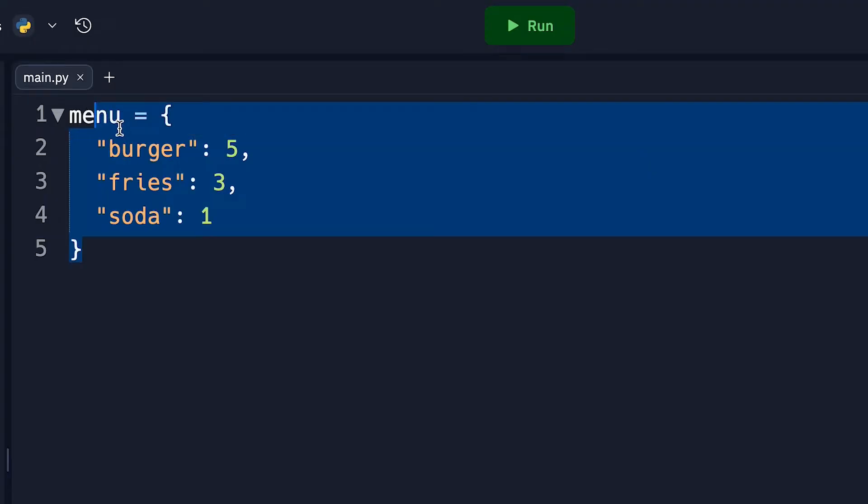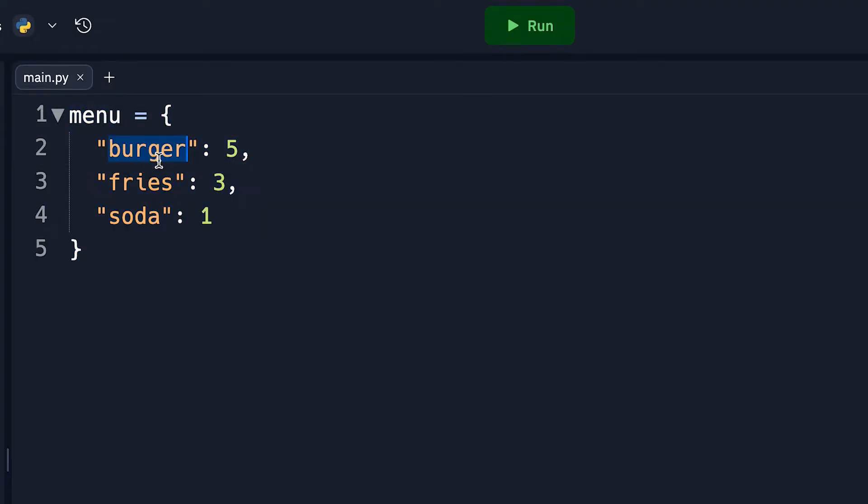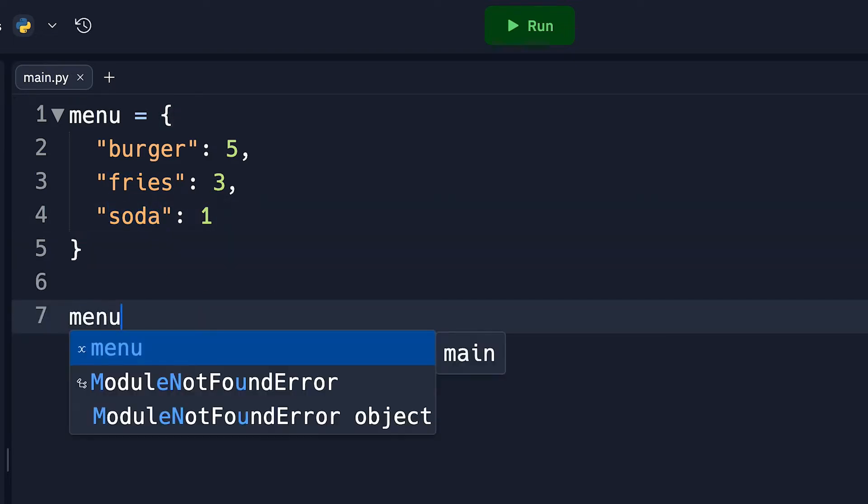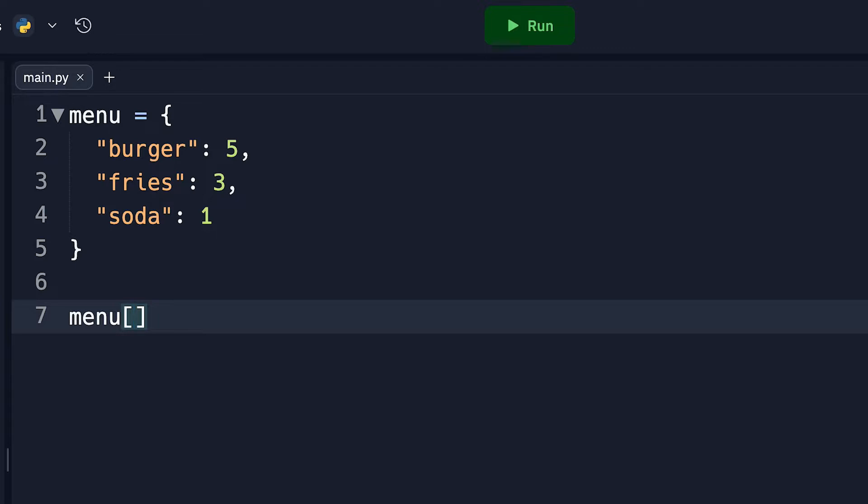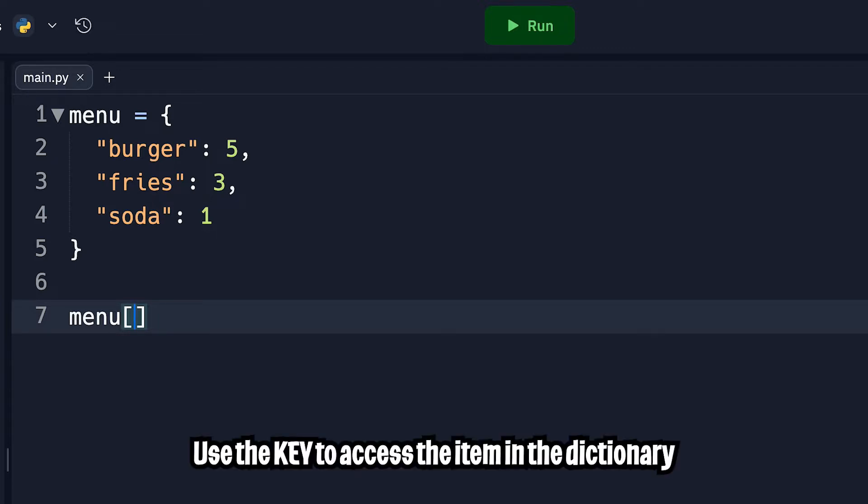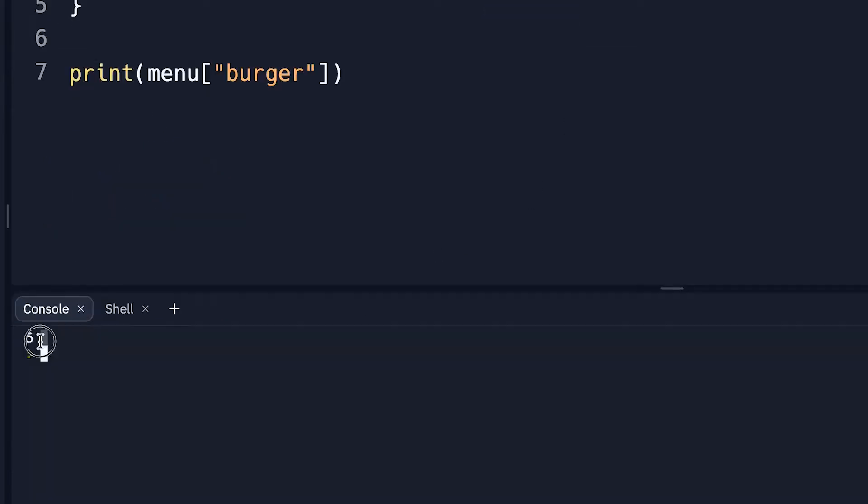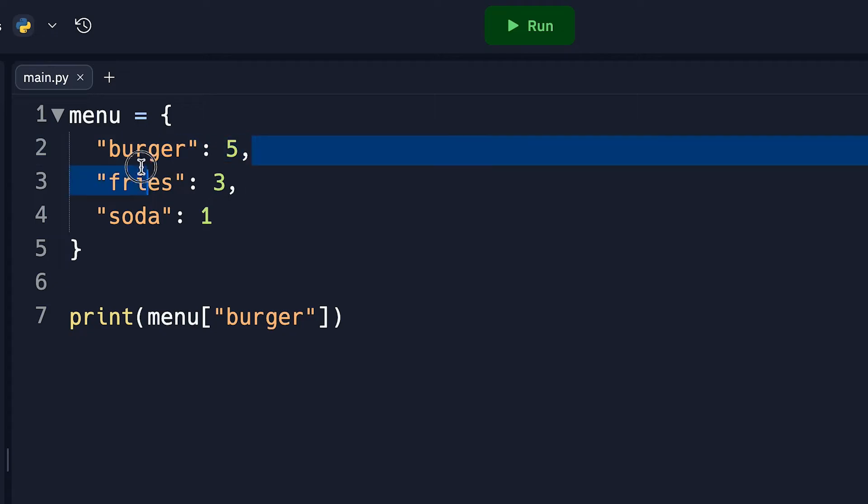So I've created a simple dictionary here to reflect a menu with three items: burger, fries, and soda. And to access the price for an item, all we have to do is type menu, open the square brackets, and enter the name of the item that we want to get the price for. So in this case, let's get burger. So let's print this value out, and now let's hit run. And as you can see, we got five, which matches up with the burger.